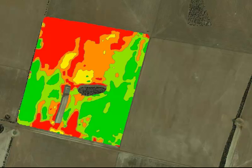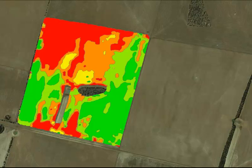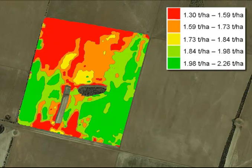Collecting yield data using precision agriculture equipment is a relatively simple means to assess a trial's results. Keep in mind, however, that the yield monitors on harvesters will never be as accurate as individual weighing of plots. It does, however, enable comparison between different regions of the paddock, and this is the key advantage in looking at variation in water use efficiency between production zones or soil types.